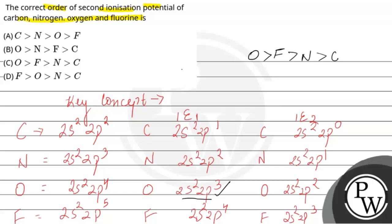This order is governed by two factors. One is the atomic number increase across the period, which increases ionization potential. The second factor is the half-filled stability exception for nitrogen, which gives it an extremely high second ionization potential. Therefore, this is the correct order, and this is the final answer. I hope you all have understood the question.